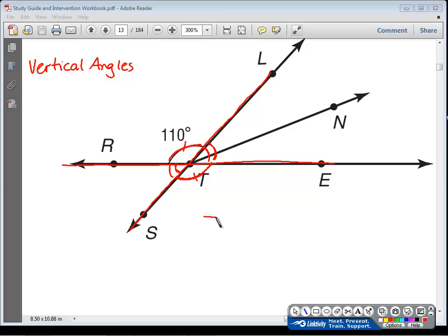I want to point out here that sometimes you may see a drawing where it looks like lines intersecting, but maybe one of those lines is not straight. It does not continue straight. These angles here are not vertical, because they are not being joined by two straight lines.